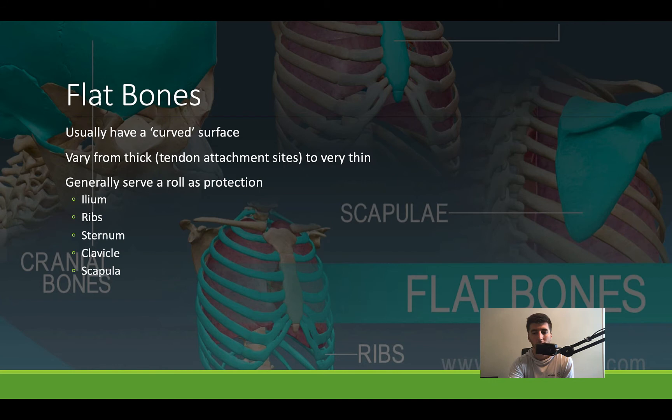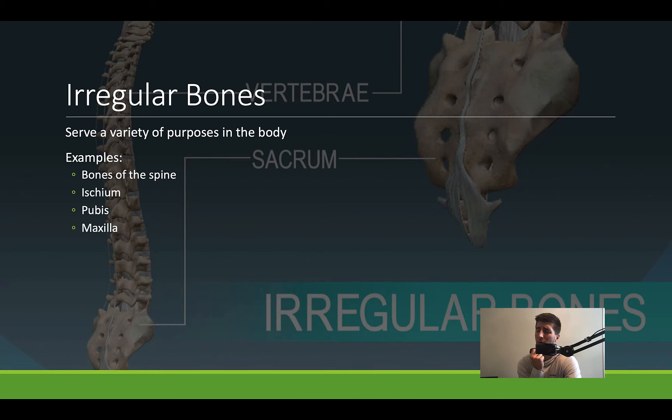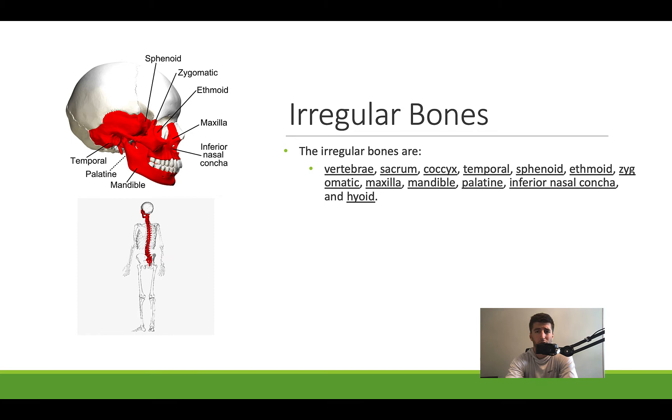Irregular bones are named irregular because they're irregularly shaped. Think about the sacrum — that's a goofy-looking thing. The bones of the spine, with all the spinous processes, are really oddly shaped bones. And then you have your maxilla — your lower jawbone — which doesn't really fit any other bone type. Here's a great example of some irregular bones.